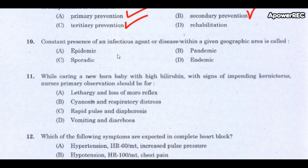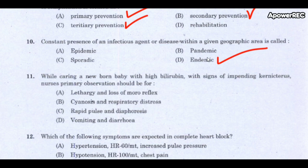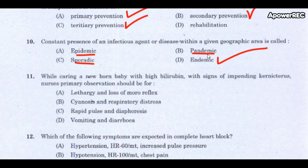Next question: constant presence of an infectious agent or disease within a given geographic area is called endemic. Epidemic is the occurrence of an infectious disease in a community at a particular time. Sporadic means isolated or scattered cases at irregular intervals only in a few places. Pandemic refers to a disease spread all over the world — as we all know from COVID-19.